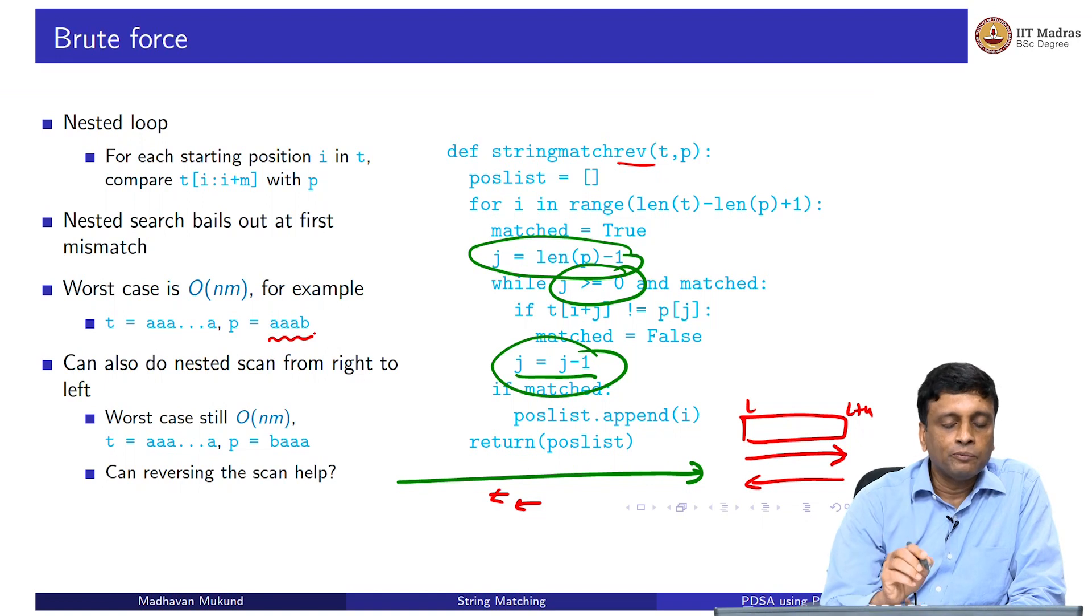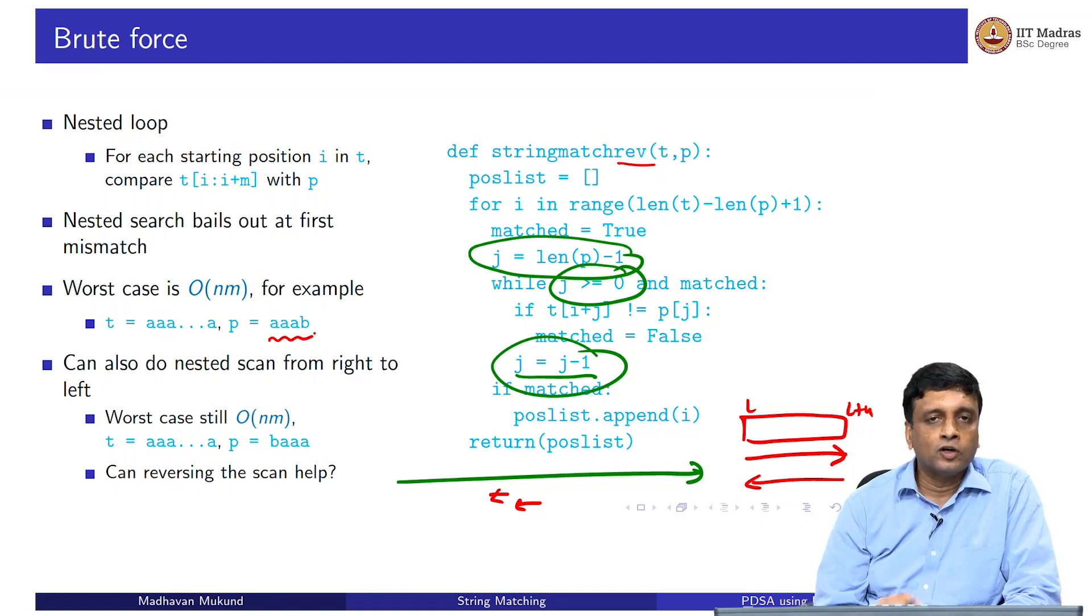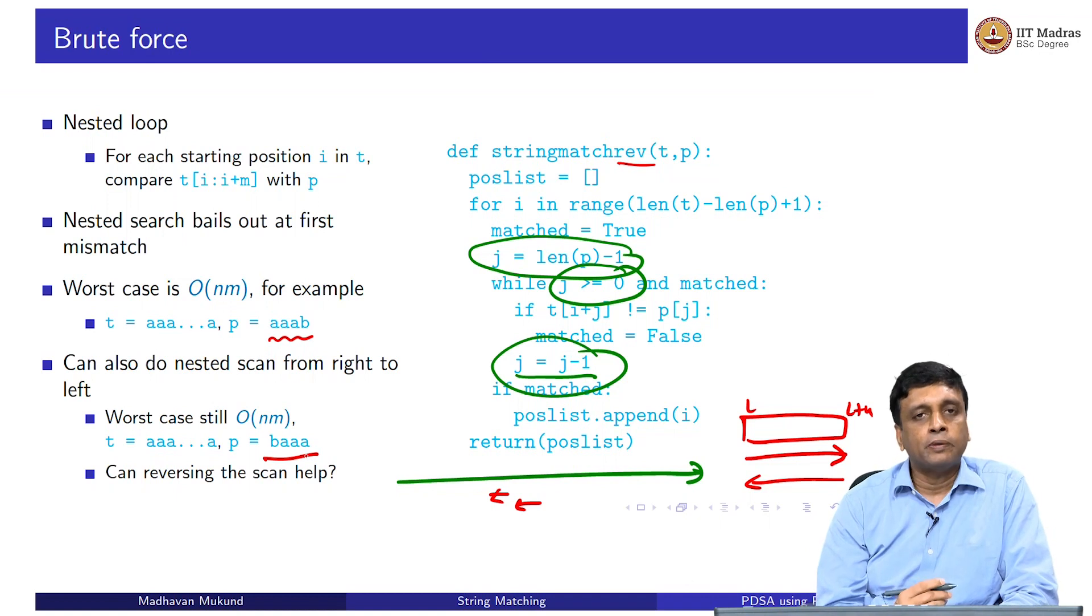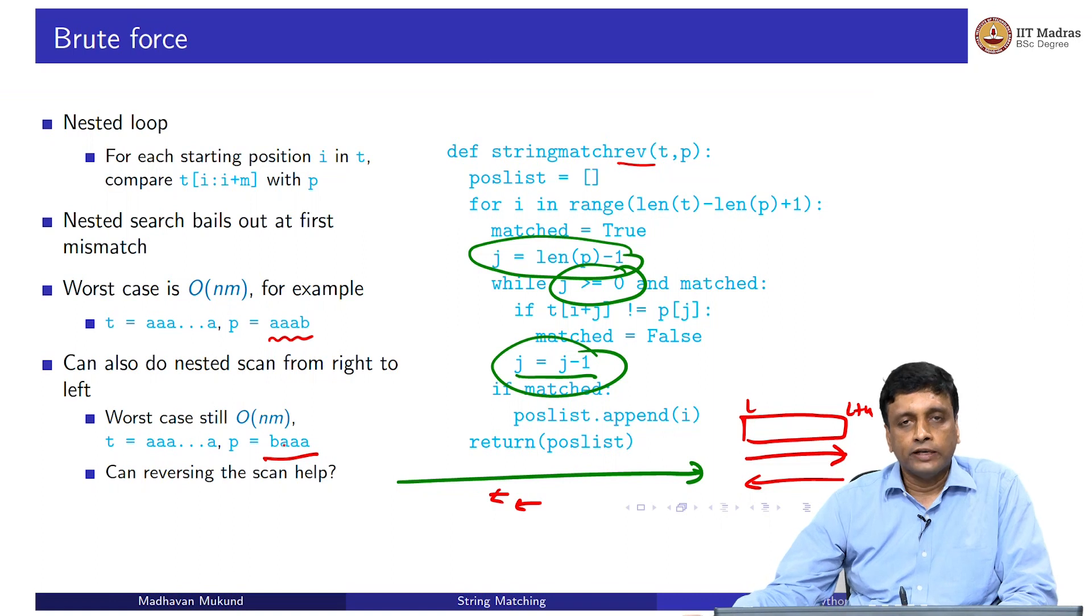There is no difference of course, this is still order Mn. This kind of a thing we would find quickly if we are doing right to left because the very first character from the right will mismatch. But if we correspondingly put a bad string which starts with the first character having a mismatch, then we do it right to left again, we spend order M time before we find the match or the mismatch. This will also be order Mn. Why are we bothering with this? Why would reversing the scan be of any use because it just looks like a different version of the brute force.